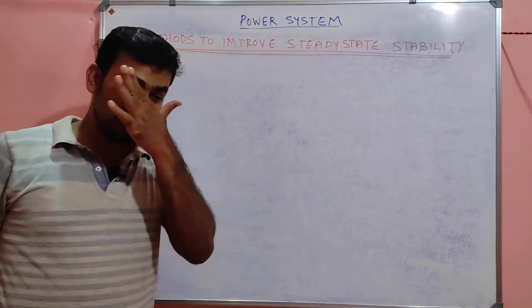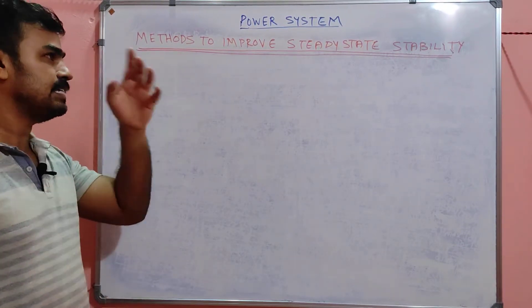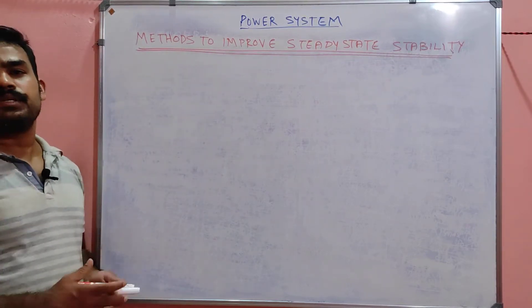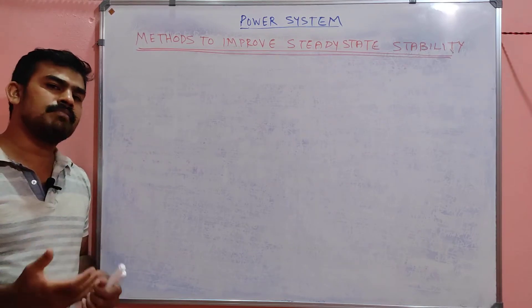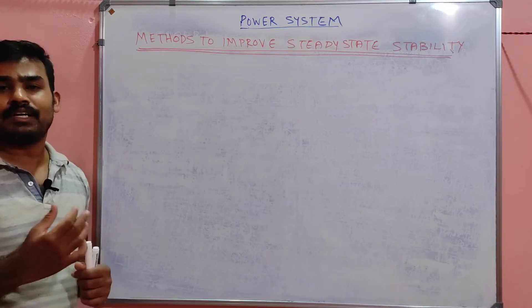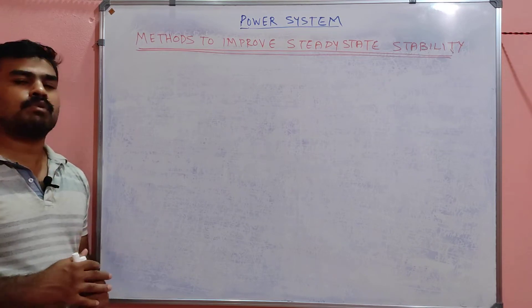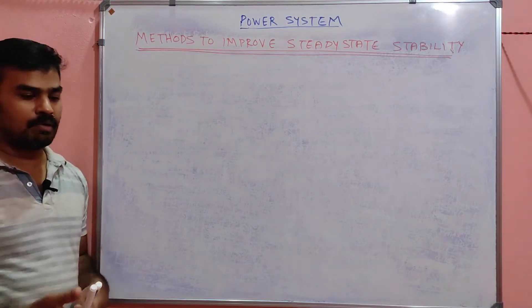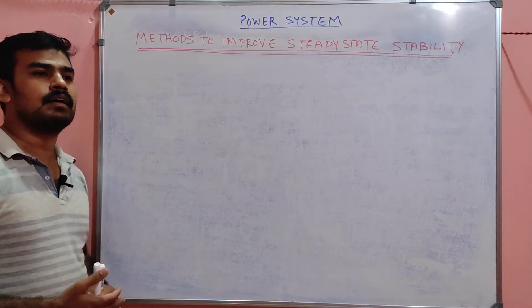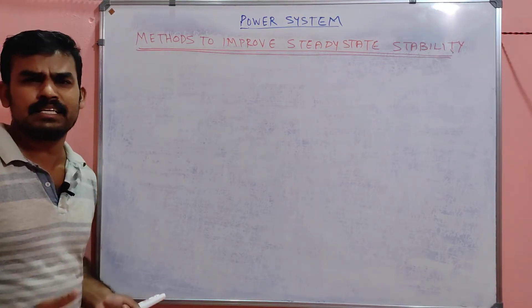Hello, for the last two or three lectures we discussed about steady state stability. Steady state stability refers to situations where the system is subjected to a very small disturbance and regains its stability within a fraction of seconds. We discussed the factors affecting steady state stability, especially the rotor angle, and how to find the conditions for oscillation and stability criteria.